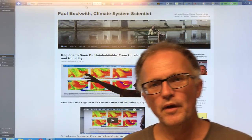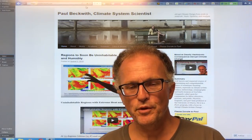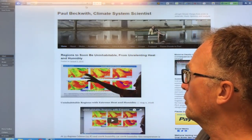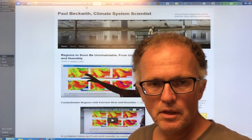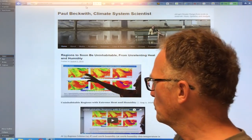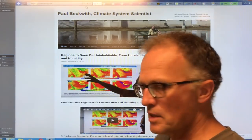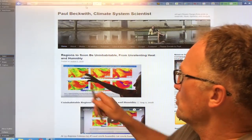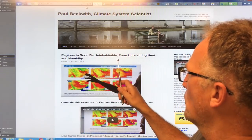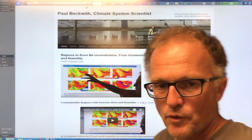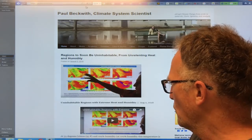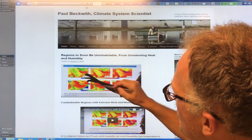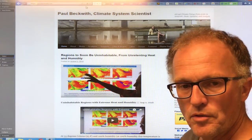Hello, I'm Paul Beckwith. I'm with the University of Ottawa Laboratory for Paleoclimatology. In recent videos, I've talked about the effects of this massive heat wave that has been hitting many regions of the planet this summer. So I discussed regions to soon be uninhabitable from unrelenting heat and humidity. For example, the Northeast China Plains, the Middle East, which is shown here, Southern Asia, etc.